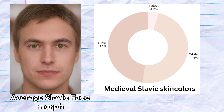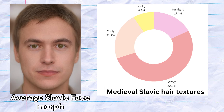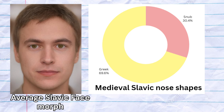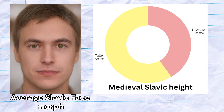The most common predicted skin colors were white and olive, and one sample scored palest skin tone. The most common predicted hair texture was wavy, followed by curly and straight, but two samples did score kinky hair texture. The most common nose shape among the early Slavs is Greek, although snub-shaped nose was also found in 7 out of 23 samples. More than half of the samples were predicted to be taller than average in height.